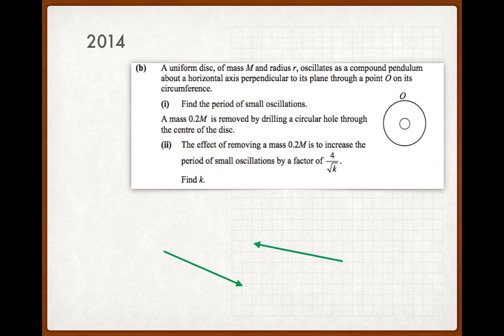Then we're told that a mass of 0.2m is removed by drilling a circular hole through the center of the disk. So now what's happened is the mass of the disk has changed because 0.2m is removed from it, and if the mass changes then the moment of inertia has to change as well with that mass.